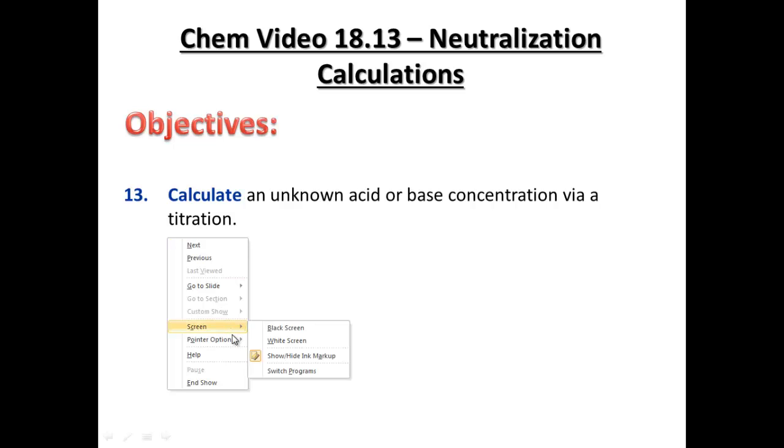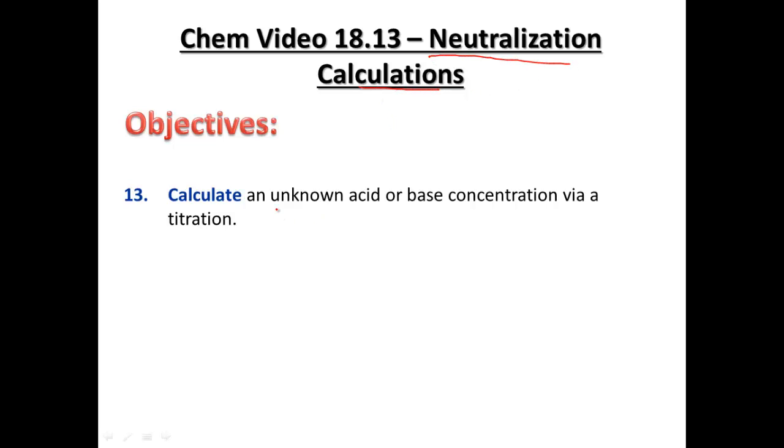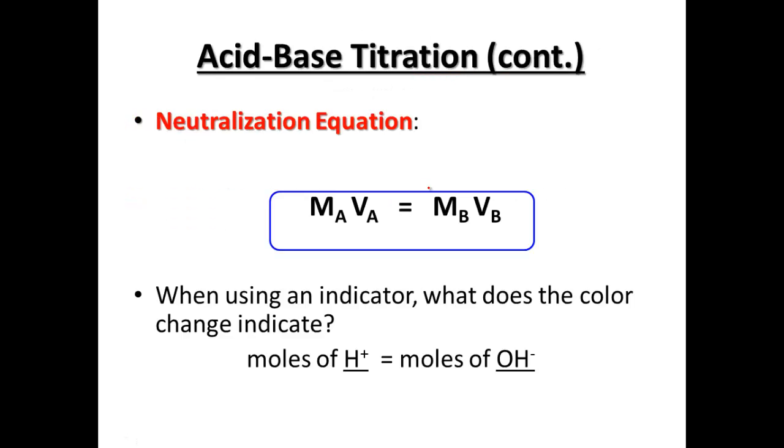We're going to now use our neutralization calculations to find out and calculate the concentration of an unknown acid or base during our titrations. And so in lab and other places, what we're going to do is look at the idea of knowing one part or knowing three parts and solving for the other.